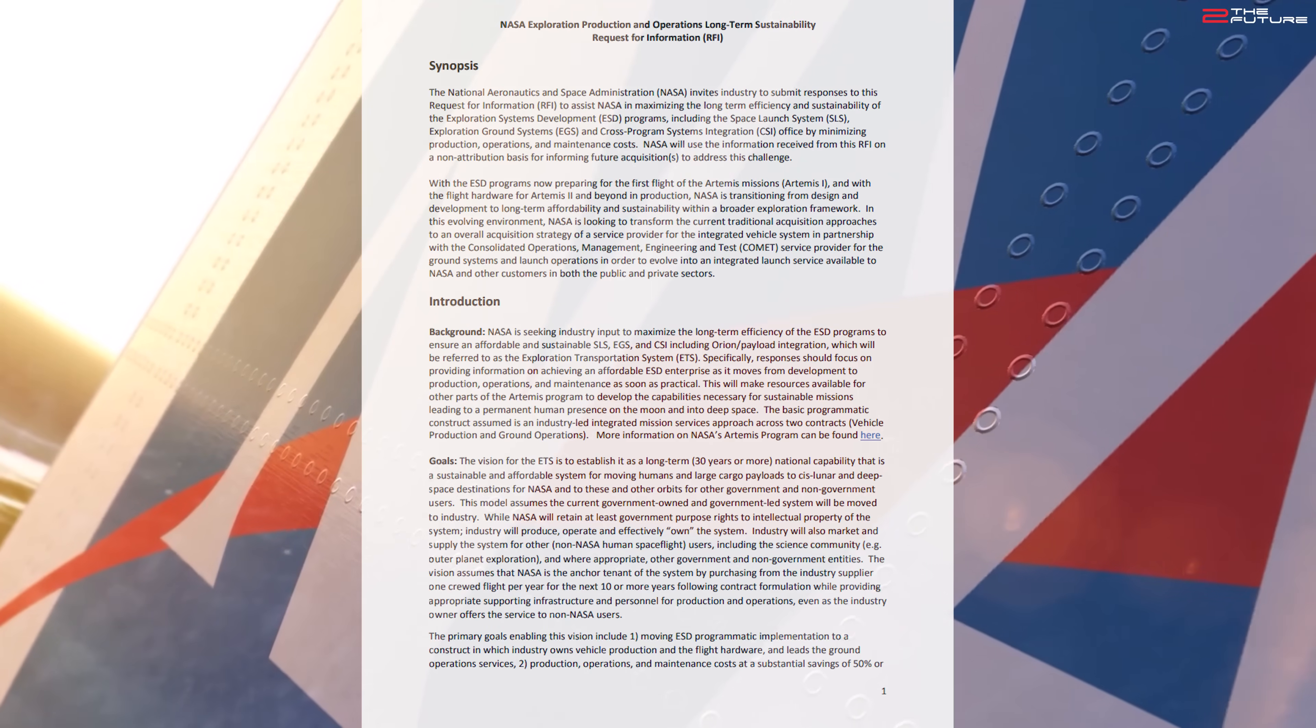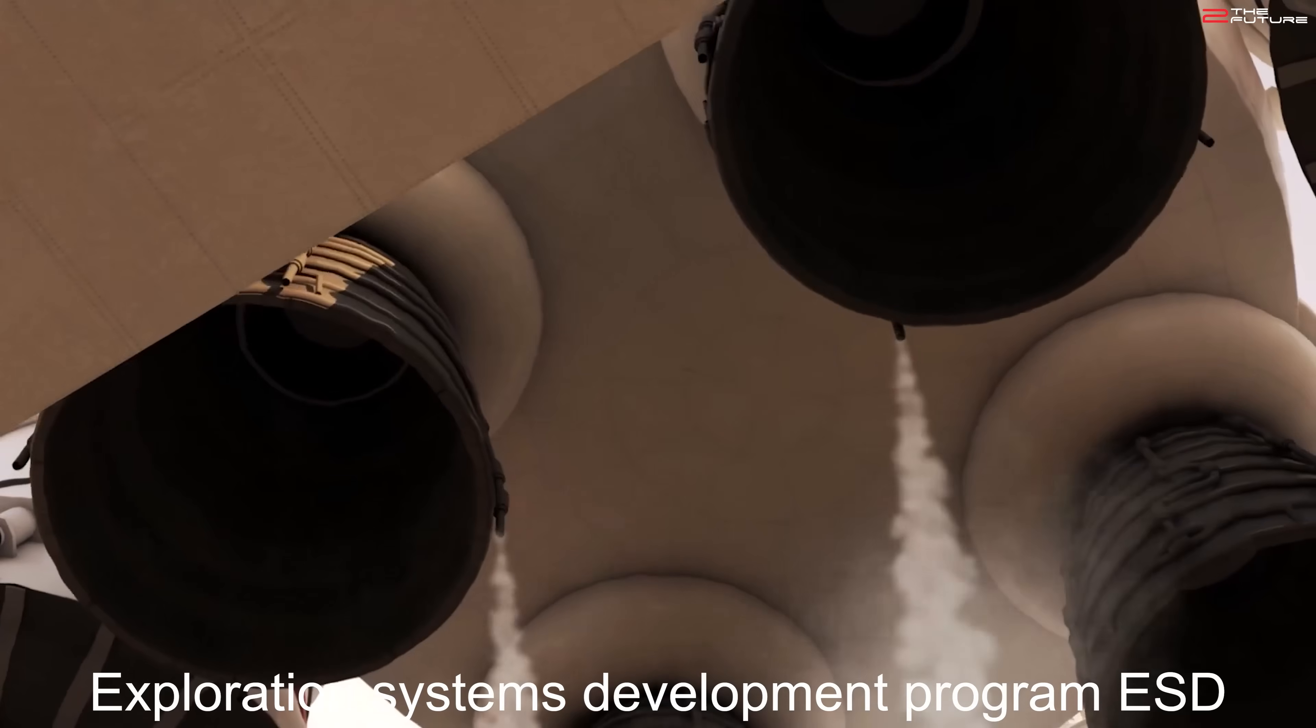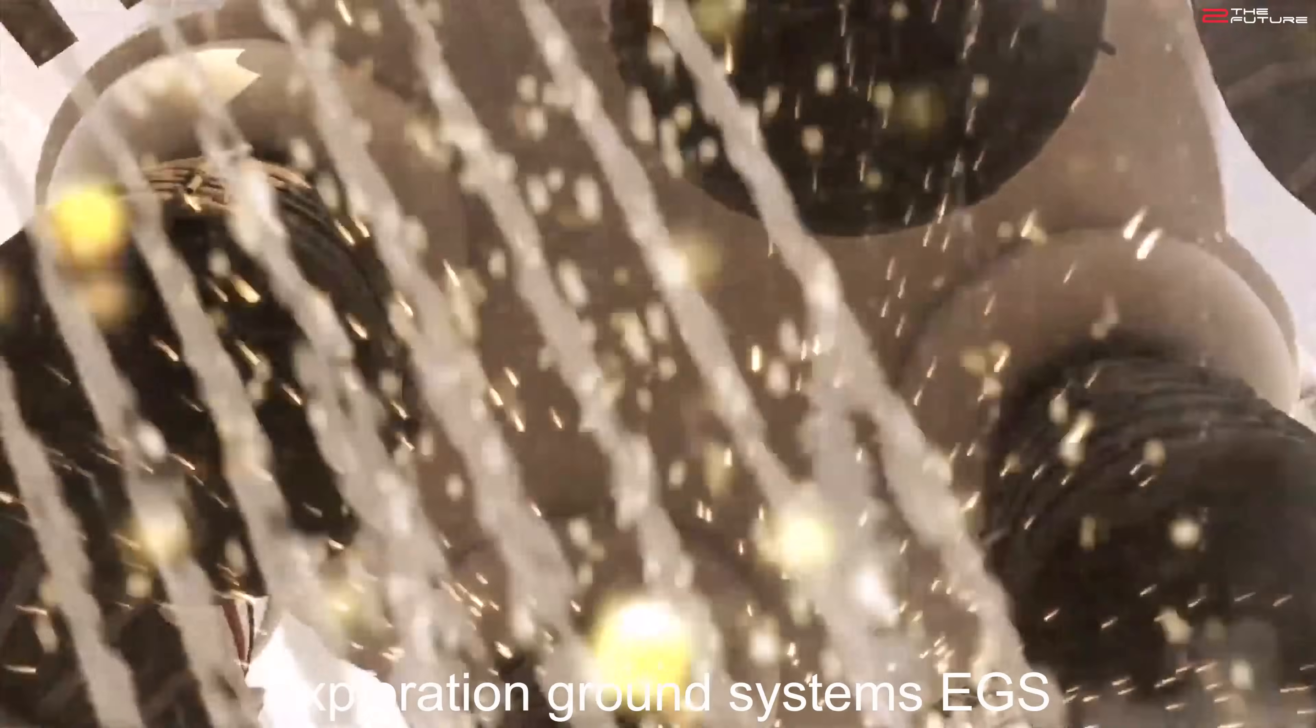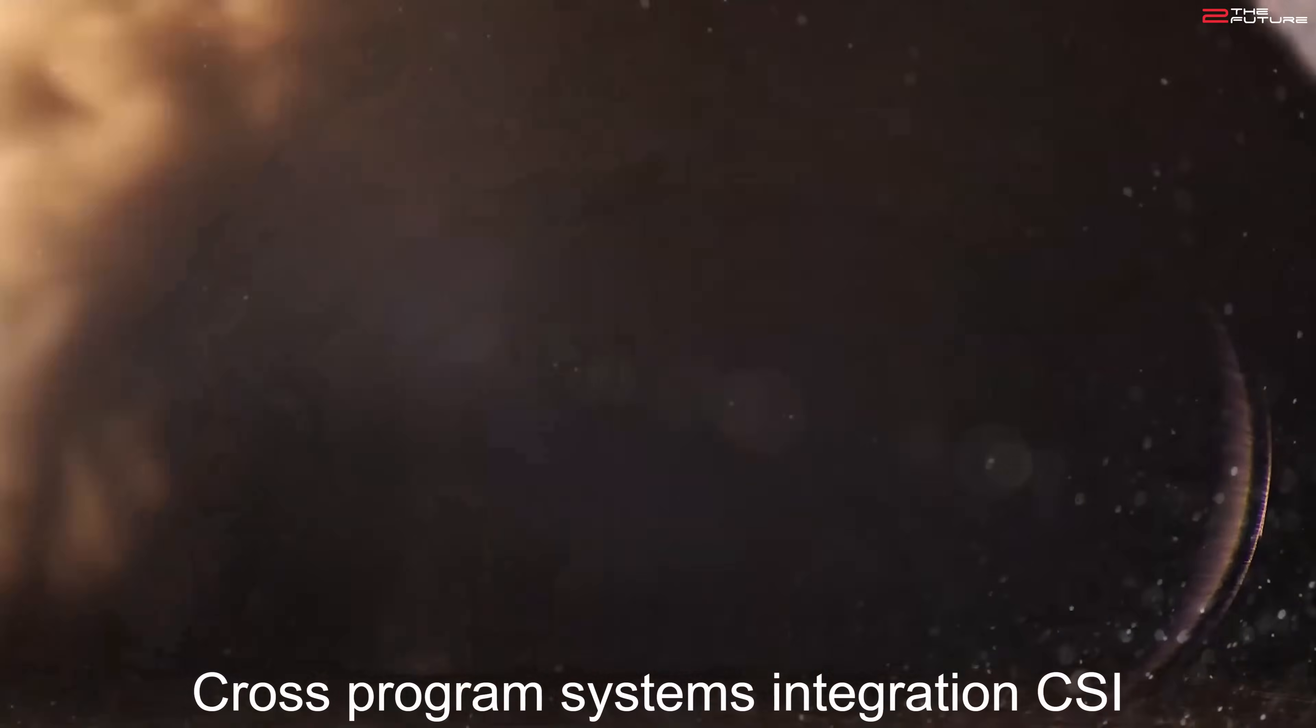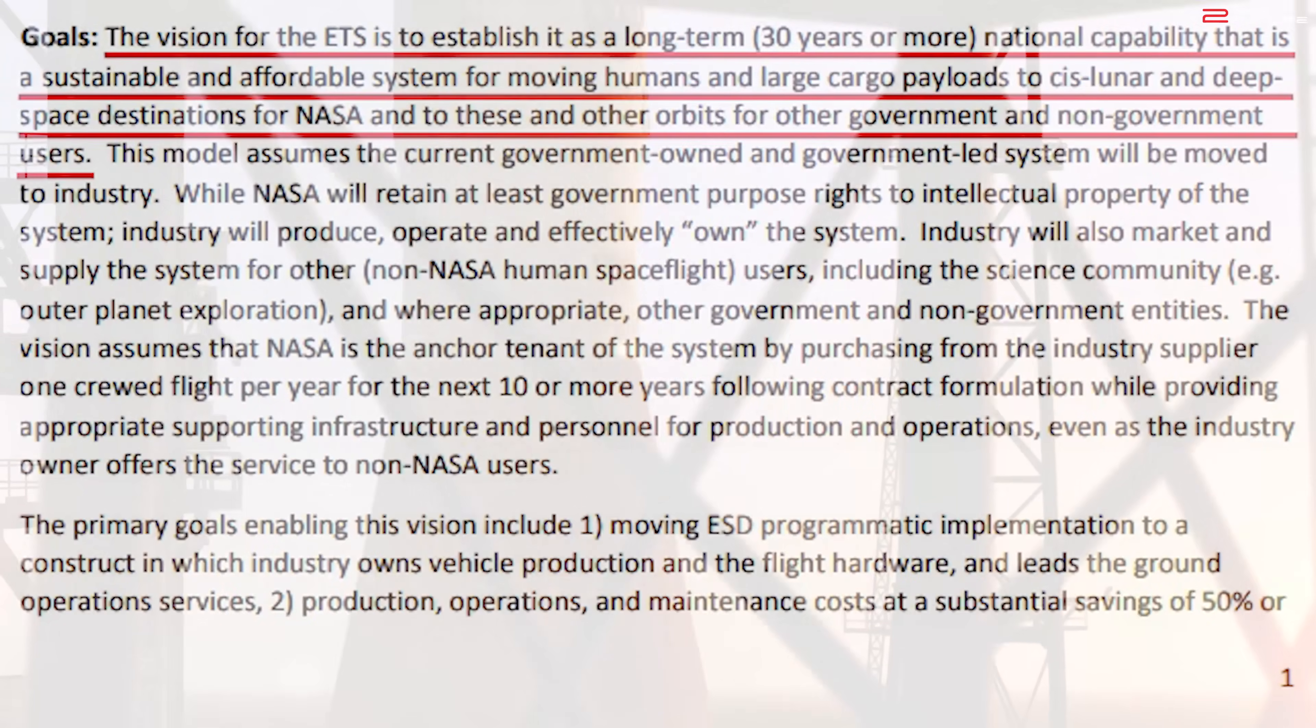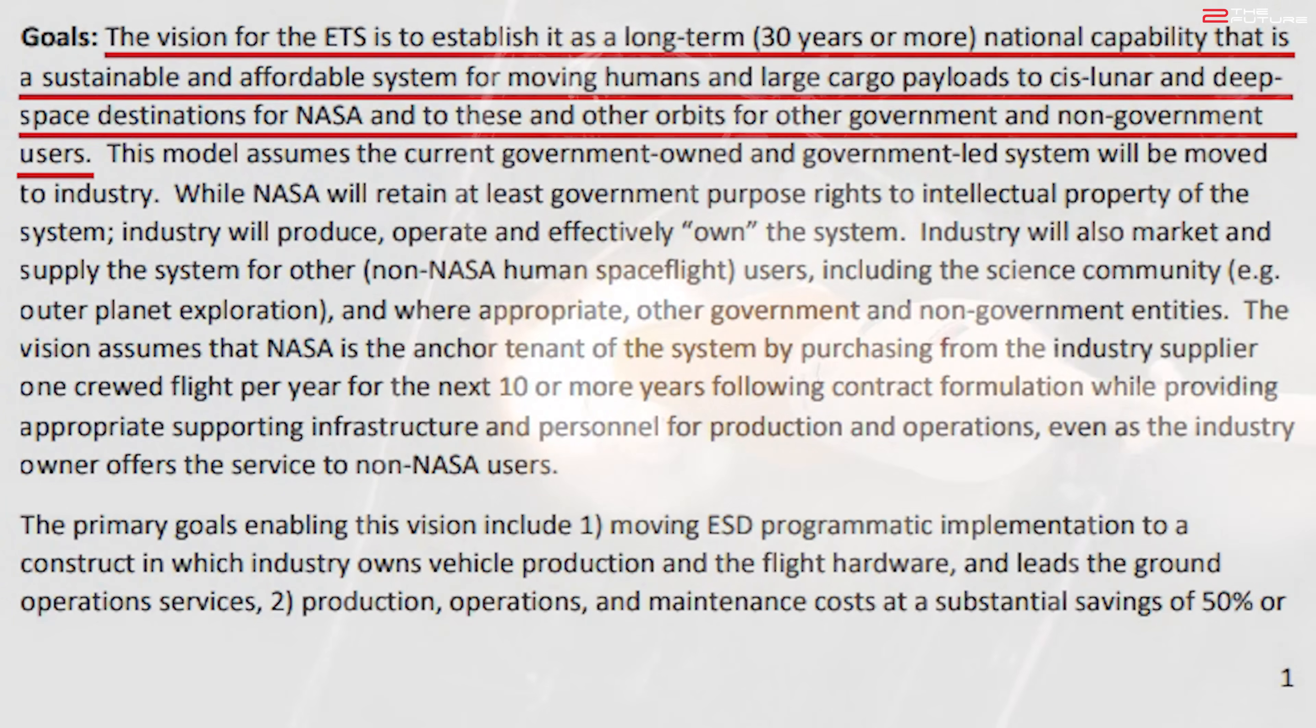In this file, NASA introduced lots of new fancy abbreviations. For example, the Exploration Systems Development program (ESD), which includes the Space Launch System rocket (SLS) itself, then Exploration Ground Systems (EGS) and Cross Program Systems Integration. Okay, lots of fancy and cool abbreviations. But here comes the kicker. We can read at Goals: "The vision for the ETS is to establish it as a long-term (30 years or more) national capability that is a sustainable and affordable system for moving humans and large cargo payloads to cislunar and deep space destinations for NASA and to these and other orbits for other government and non-government users."